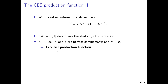If rho goes to minus infinity, the elasticity of substitution between capital and labor goes to 0, and capital and labor are perfect complements. This is the case of a Leontief production function. In this case, we cannot substitute capital for labor and vice versa, and if we increase only one of the production factors, we cannot produce more — the other one is the limiting factor.